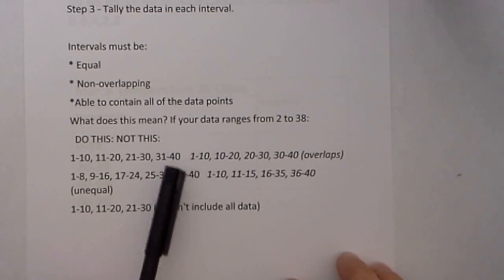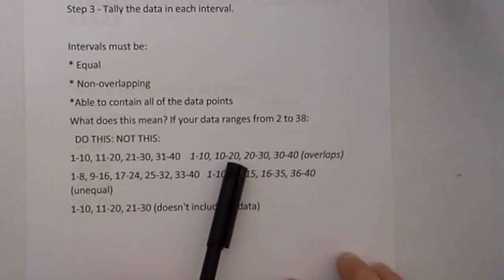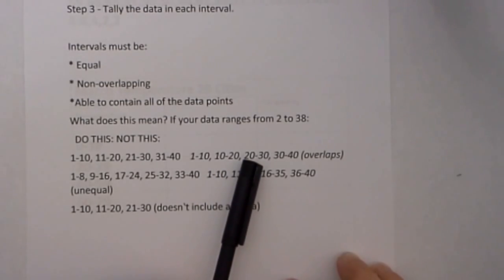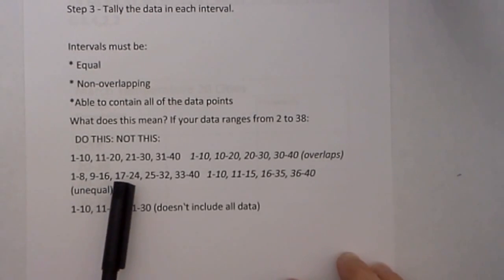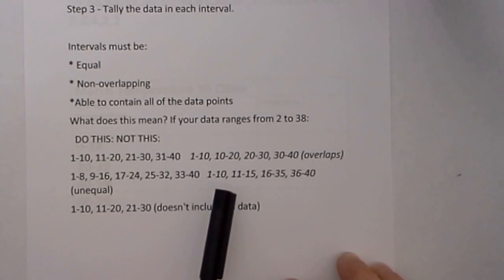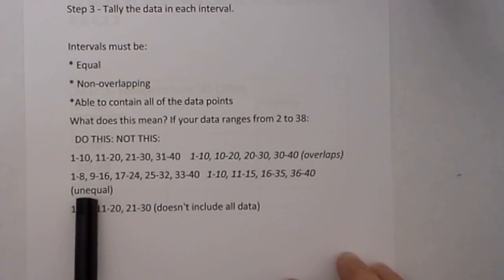Let's not do this. We have 1 to 10, 1 to 8, 9 to 16, 17 to 24, and not this. Notice that it goes up by 10, 15, and 9. They are unequal.